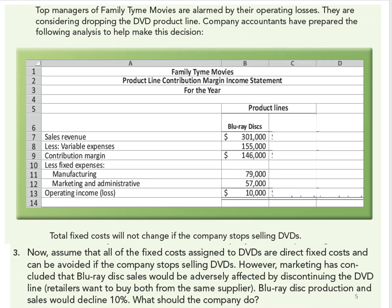Let's look at what happens if all the fixed costs assigned to DVDs are direct fixed costs and can be avoided if they quit selling DVDs. The problem is marketing has concluded that Blu-ray disc sales would be adversely affected by discontinuing the DVD line, because retailers want to buy both from the same supplier. So Blu-ray disc production and sales would decline by 10%. What should the company do?